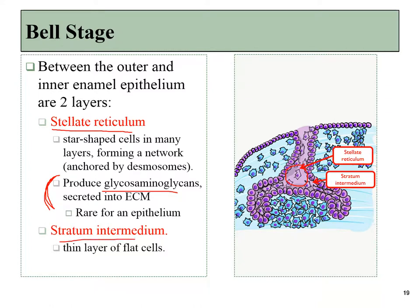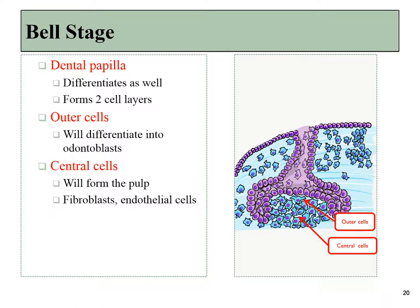There is also a layer of flat cells called the stratum intermedium, which we will not discuss further. The dental papilla also begins to differentiate at this time. The outer cells of the dental papilla — those touching the inner enamel epithelium — will differentiate into odontoblasts, while the central cells that do not make contact will turn into regular connective tissue cells like fibroblasts and endothelial cells.